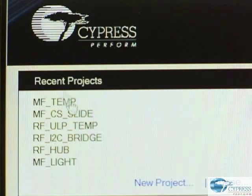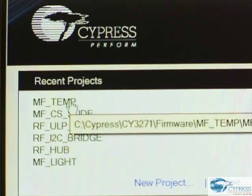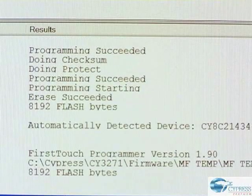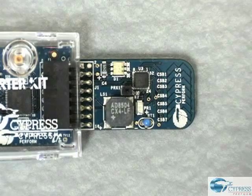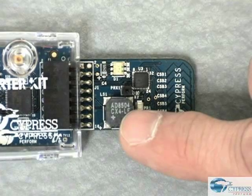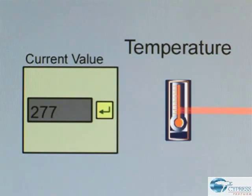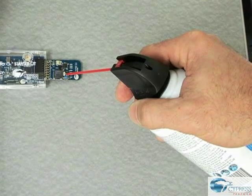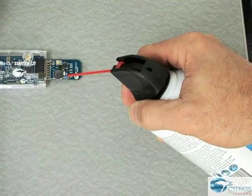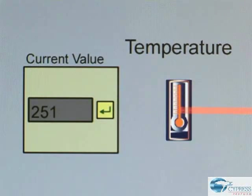We will select the thermistor project that we have already designed and configure the PSOC device. You can see that when I warm up the thermistor by putting my finger on it, the temperature goes up. And I can make it really cold by spraying it with this can of freeze spray, and you can see the temperature drops like a stone.